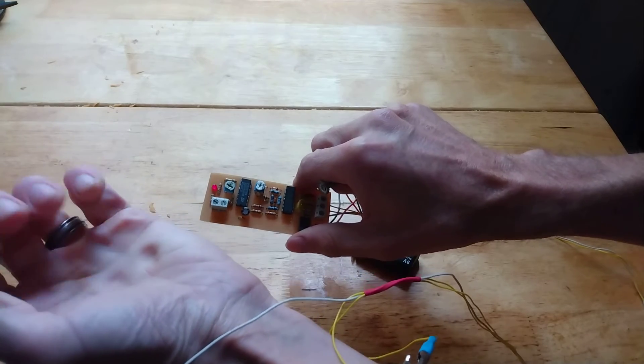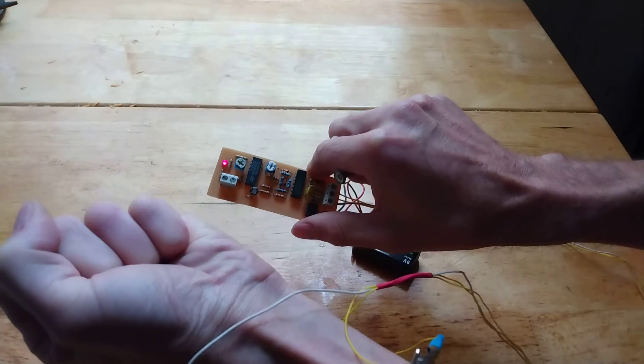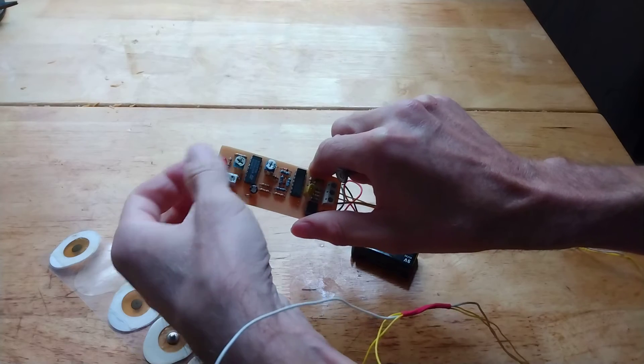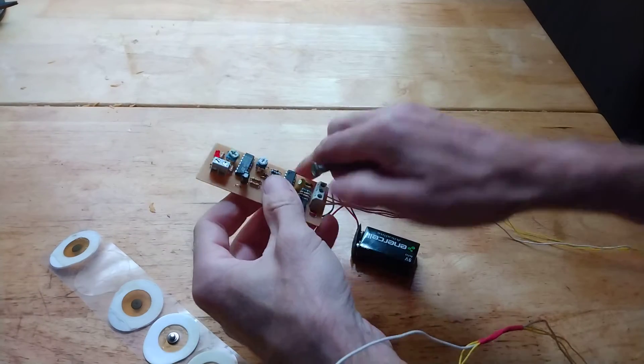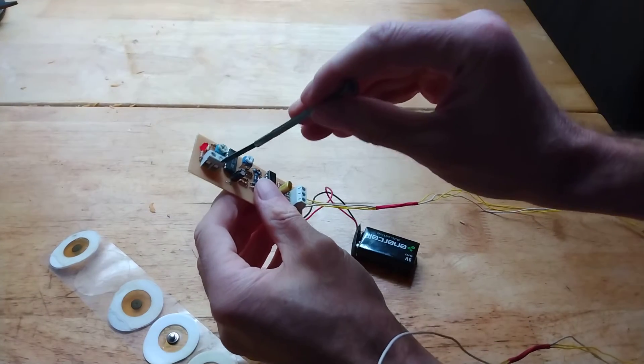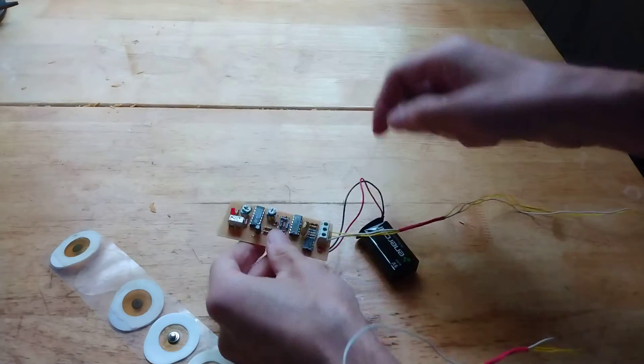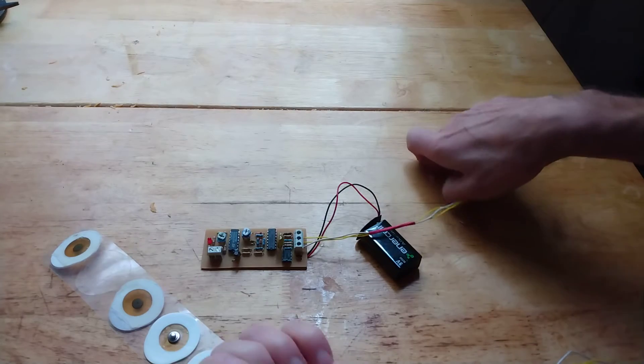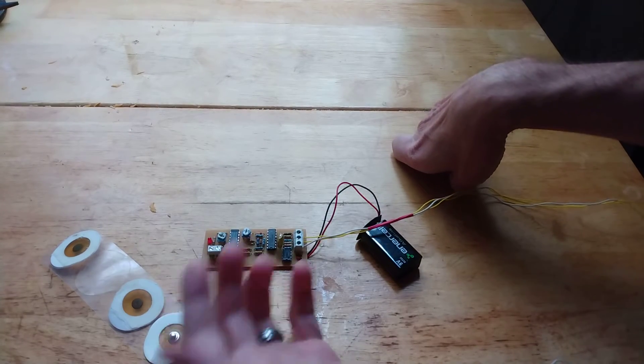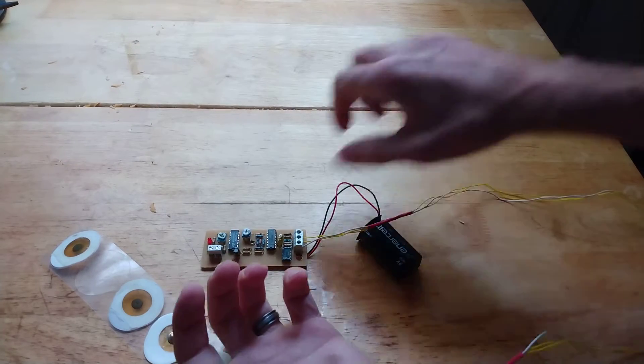And of course you want to do something else than just turning on an LED. So with this terminal block you can connect this unit to another circuit that can control, for example, a servo or whatever electronic device you want to control.